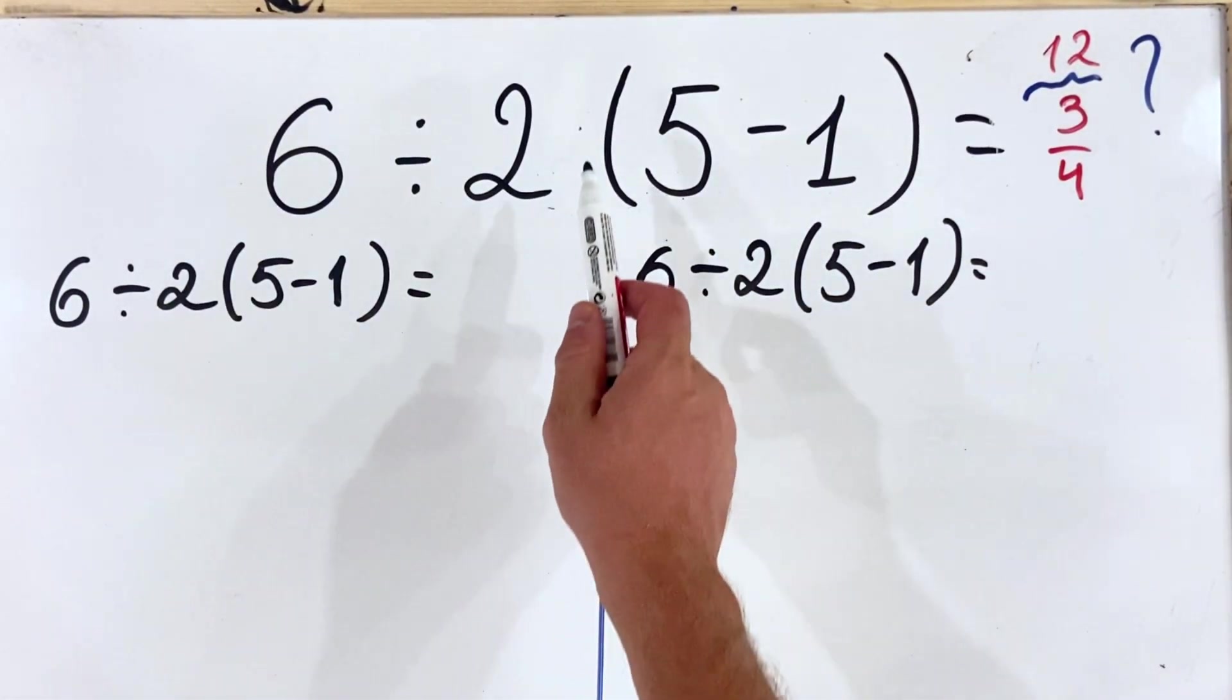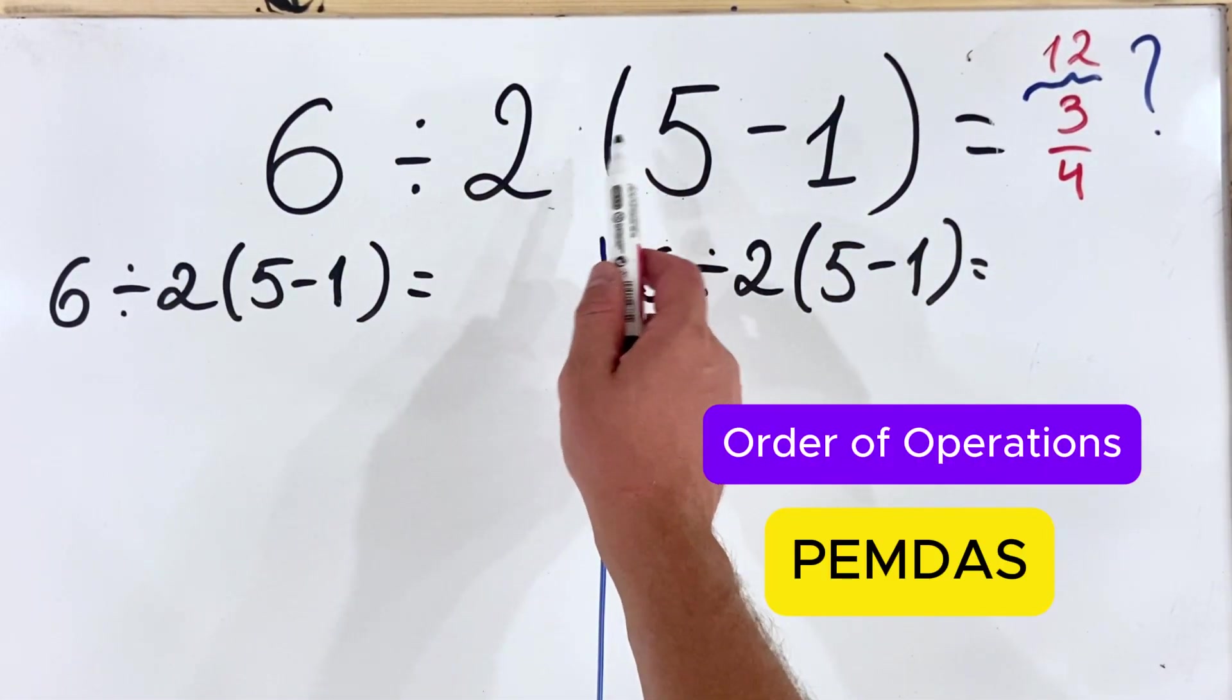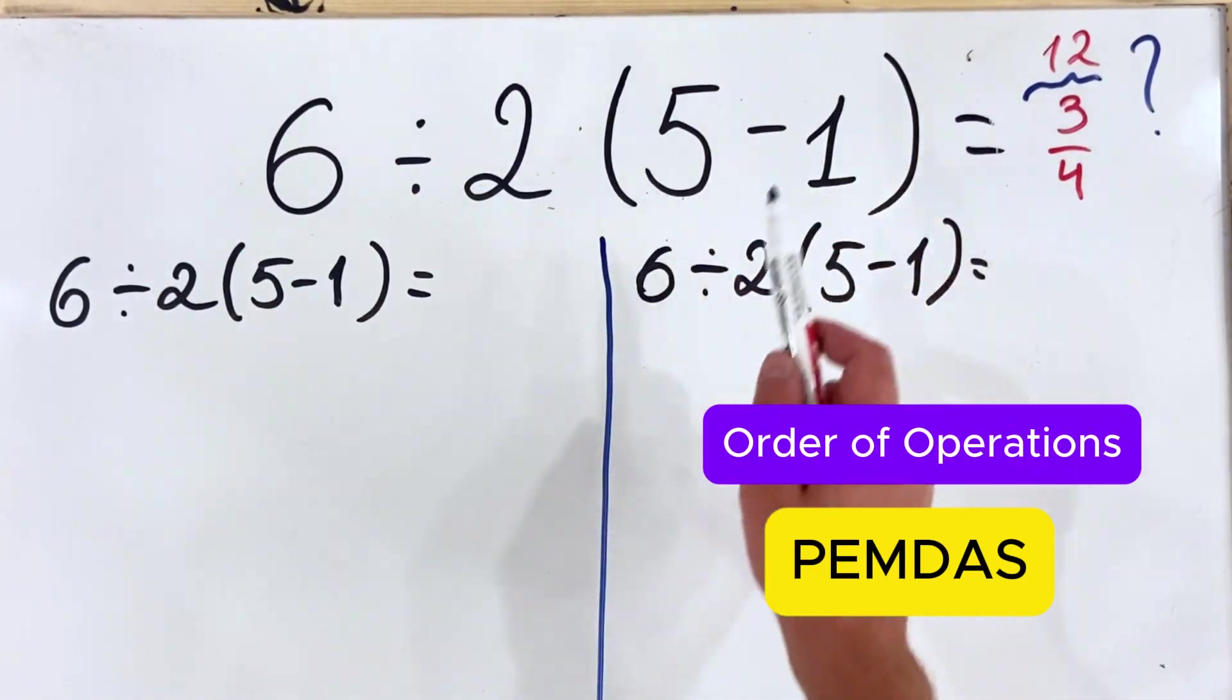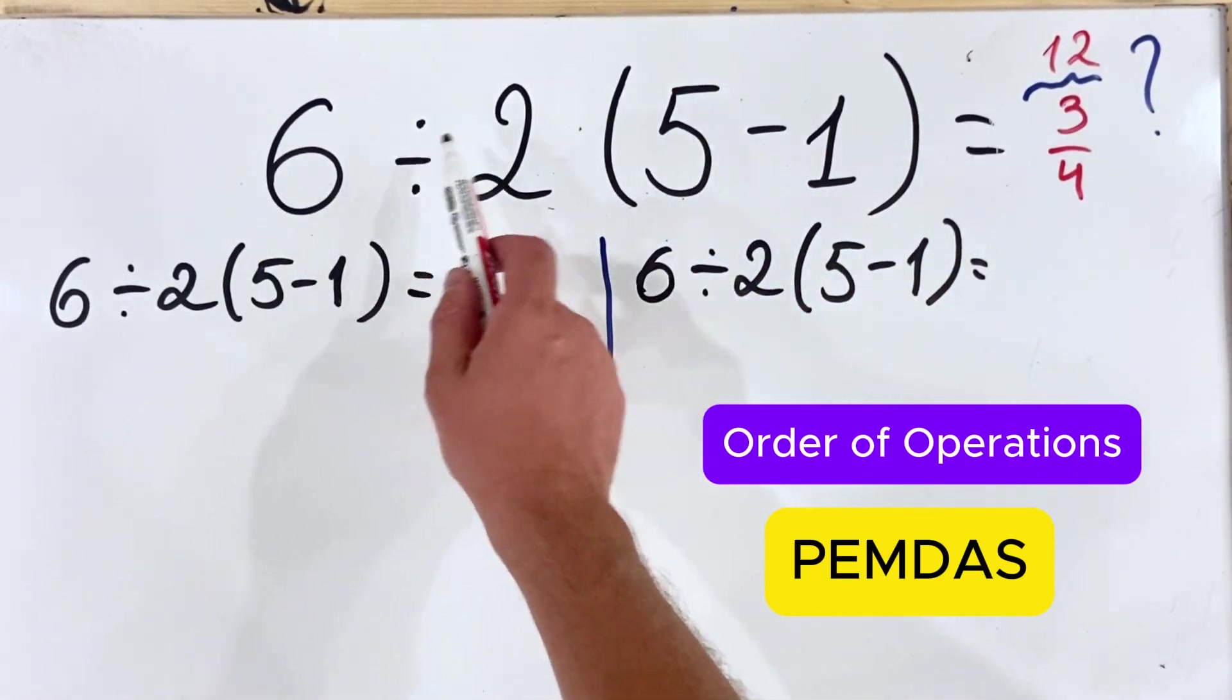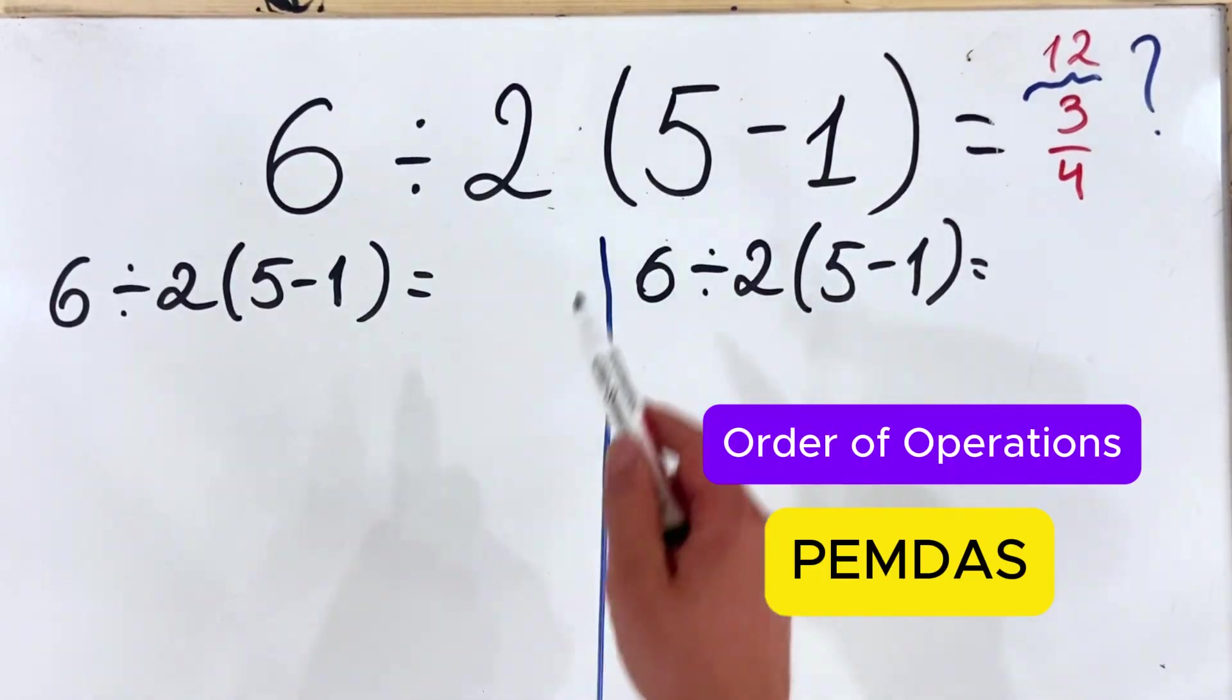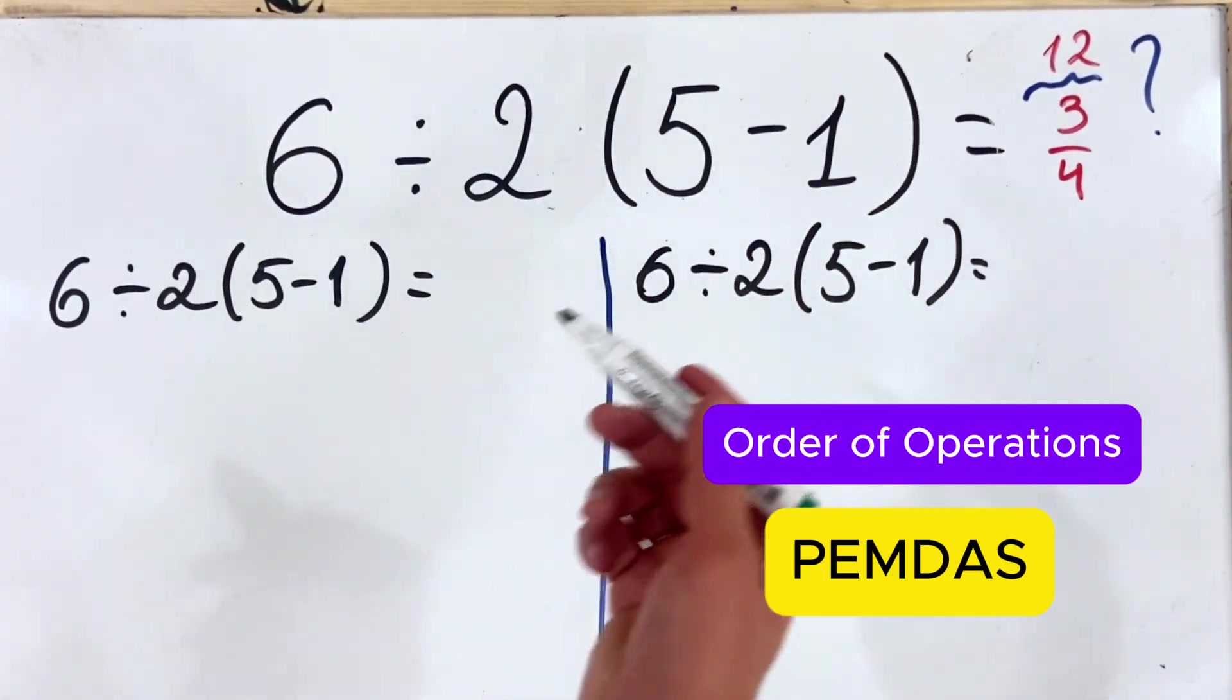The debate online is: should we use PEMDAS, the order of operation, and tackle parentheses first, then division, multiplication, or should we use the implicit multiplication?